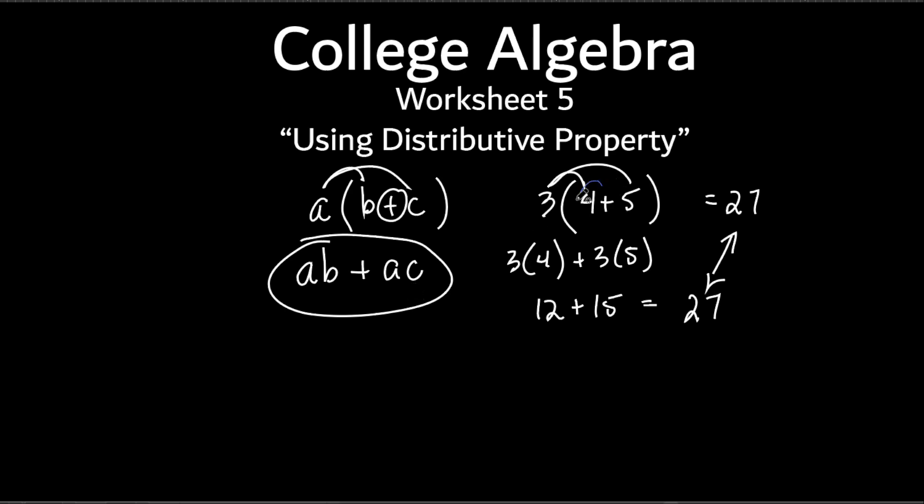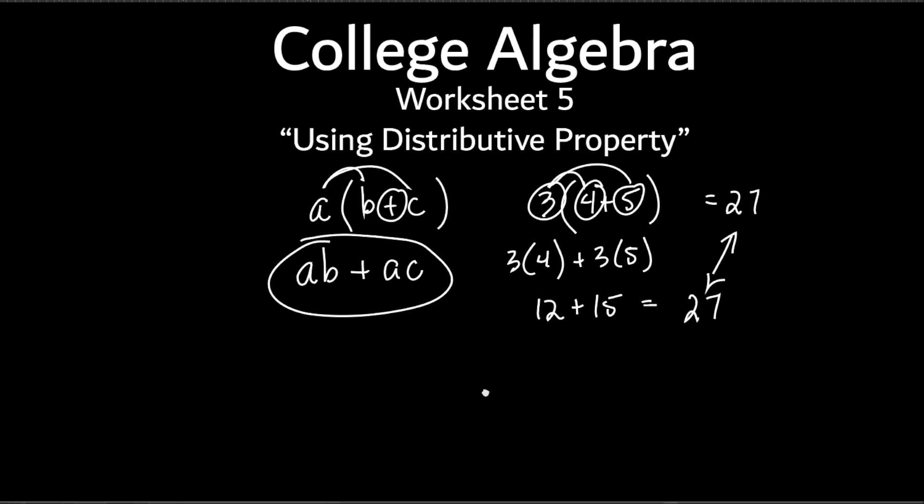But we're not always just going to have just a bunch of regular numbers. You know there's going to be variables. And why in the world are there variables? Well, if you take physics or chemistry or things like that, the variables are super important because they stand for things. They could stand for acceleration, for velocity, they could stand for all kinds of stuff.